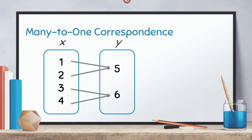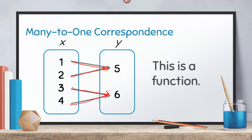On the other hand, in many-to-1 correspondence, see that each value of x is being paired to only one value of y. Like 1 is being paired to 5 only, 2 is also paired to 5 only, and the same goes for 3 being paired to 6 only and 4 being paired to 6 as well. Therefore, this correspondence is a function. Don't be confused thinking that this is not a function since the value of y is being paired to multiple values of x. Remember the definition of function — it states that the restriction is only for x and not for y. Meaning, y can be paired to multiple values of x.